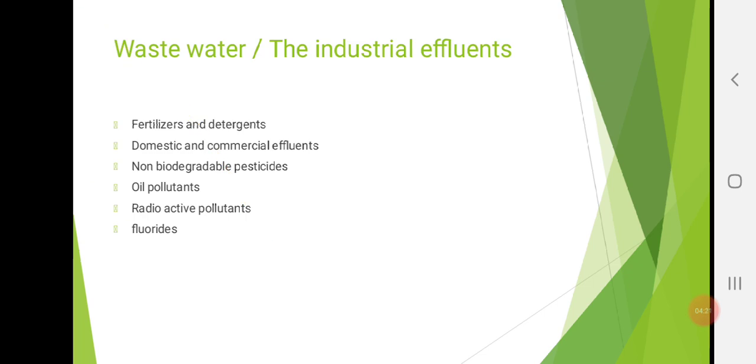The next point is wastewater or the industrial effluents. Which are the industrial effluents: fertilizers and detergents, domestic and commercial effluents, non-biodegradable pesticides, oil pollutants, radioactive pollutants, fluorides. They have toxic chemicals like arsenic, mercury, cadmium, lead, etc. They kill the aqua life and may enter in the human body through the consumption of this aqua life, mainly the fish, and may create health problems. First one is fertilizers and detergents. They act as nutrients and help to grow algae, which consume the dissolved oxygen and the biological oxygen demand increases. Reduction in the dissolved oxygen kills the aqua life.